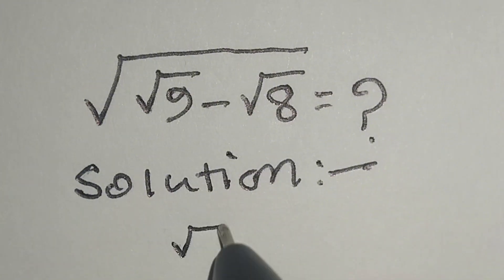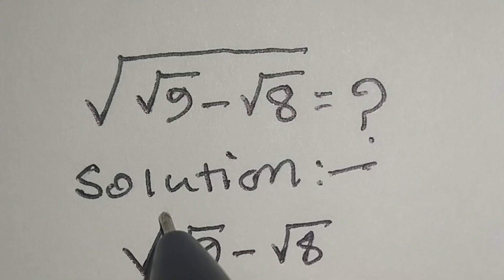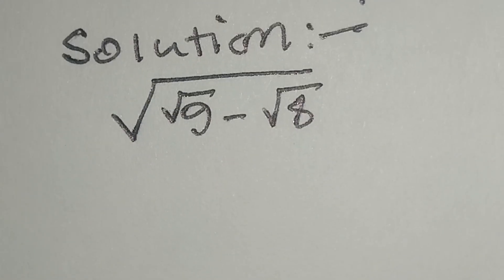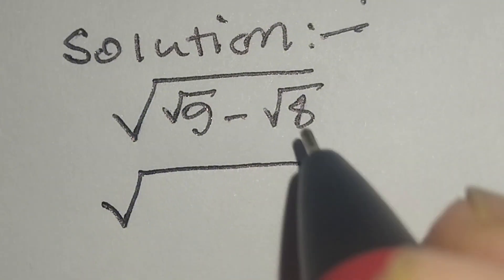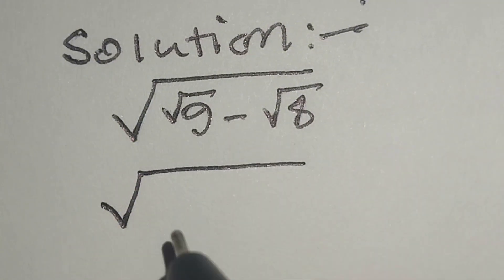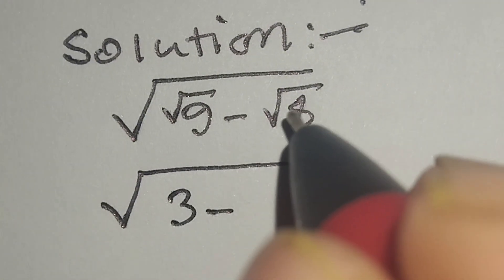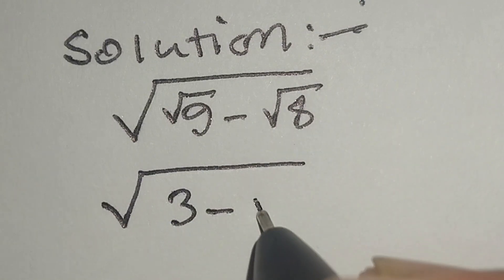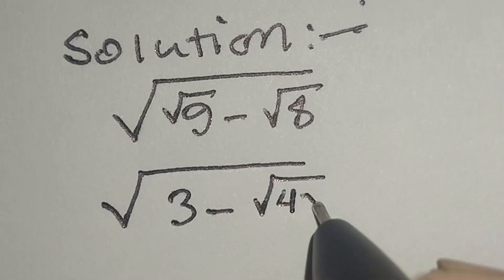Here we have the square root of 9 minus square root of 8. Square root of 9 is equal to 3, and square root of 8 is equal to square root of 4 times 2.